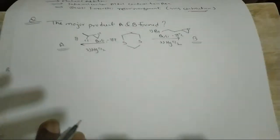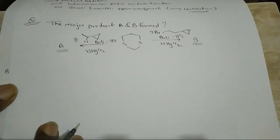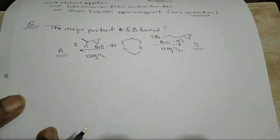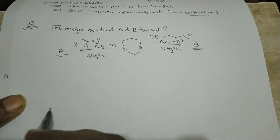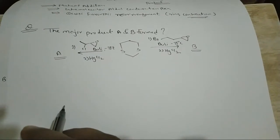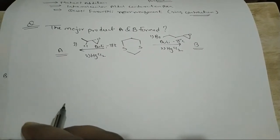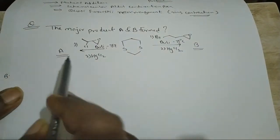The question is about protection and deprotection of dithianes. We have to find the major product of A and B. First we solve for A.